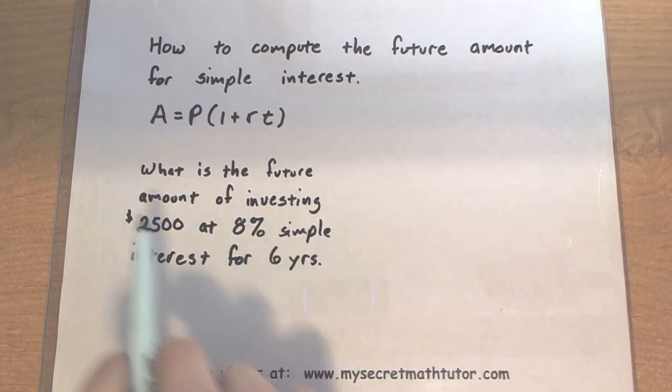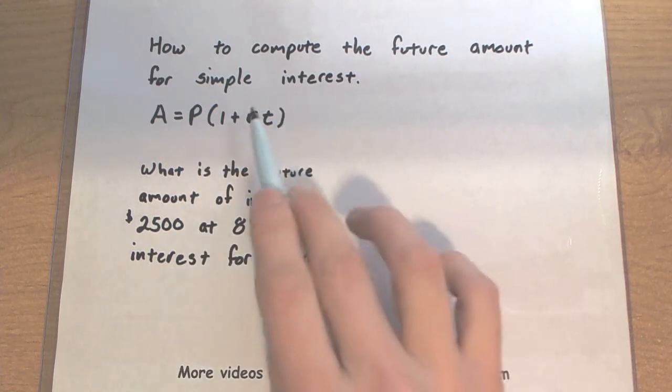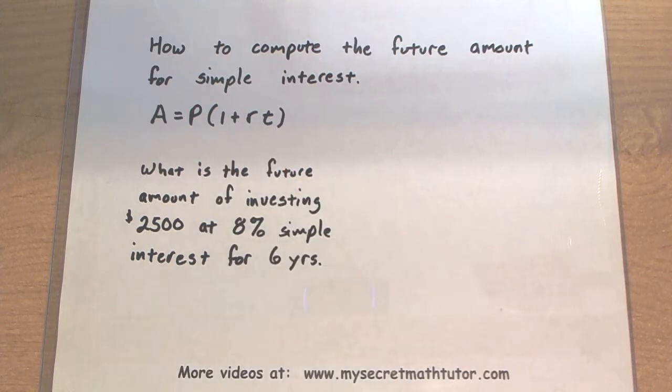To read all the variables in here, the A is the future amount of the investment, P is the principal, basically the starting amount, then we have our rate, and the time in years.